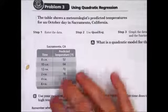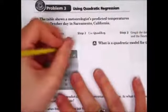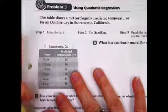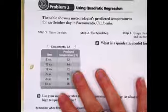Now when we enter this data in our calculator, I want to make something very specific to you. We are going to use our time as our x's just like we did before, and our predicted temperatures are going to be our y's. But we're going to have a little bit of a problem with our x's. We have to go into military time.